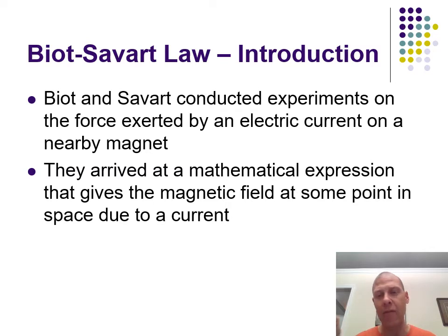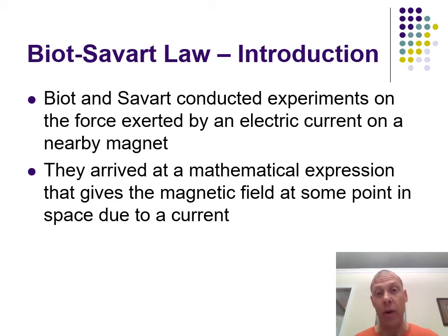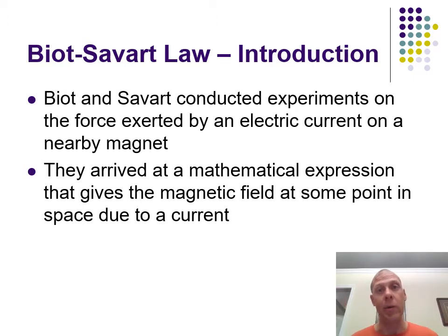If you have a charge moving through open space, it will create its own magnetic field around it that is perpendicular both to the electric field and to the movement of the charge. That often ends up being a radial thing. When you get a bunch of those charges moving together, we call that current, and current being carried through a wire will create a magnetic field around the wire.